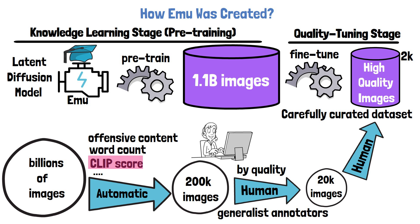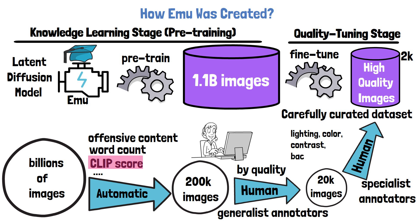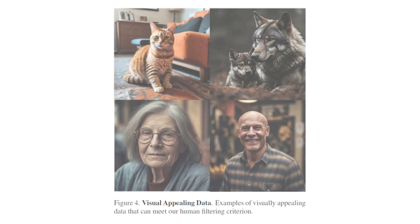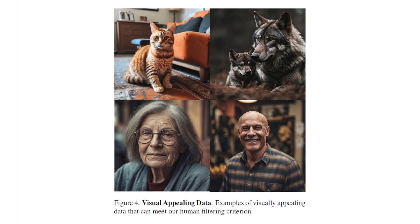The third and last step is also done by humans, bringing us to the final high quality images dataset. Here the researchers used specialist annotators who have good photography principles understanding, and guided them to keep the best images that answer guidelines about lighting, color, contrast, background, and more. In the following figure from the paper we can see a few examples of images that meet the criteria the researchers were looking for.